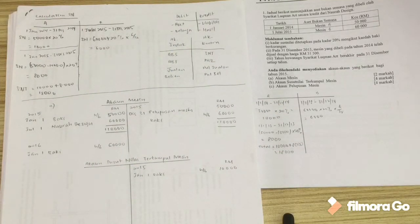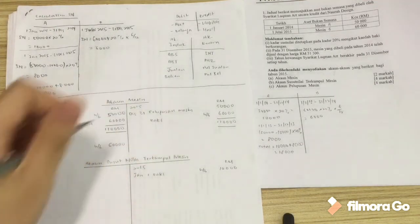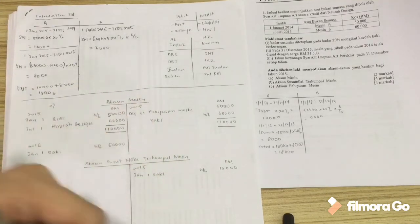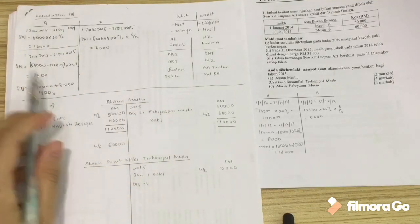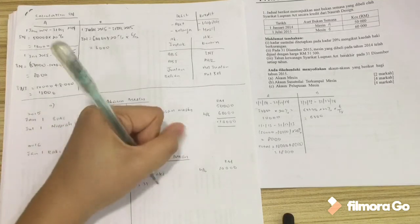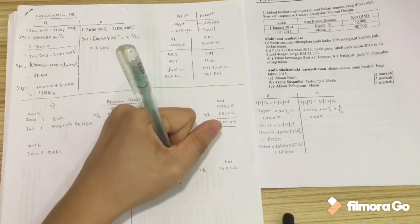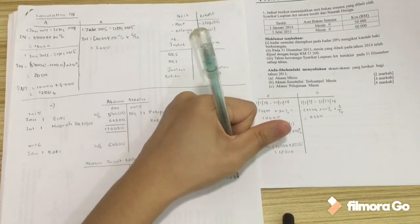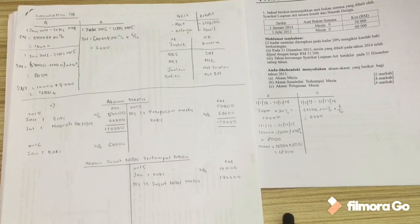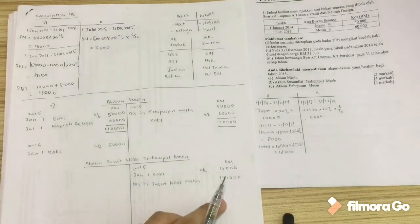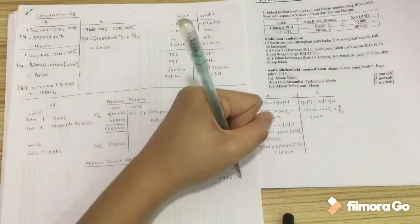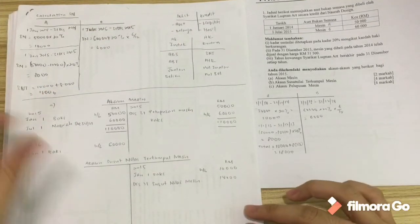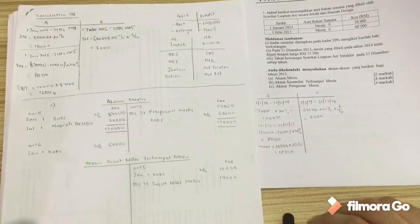The next thing we should do is to check how much susut nilai do we have for the year of 2015. The new susut nilai, we add everything up. The new susut nilai is 8,000 and 6,000. So susut nilai machine, it's 14,000 because we add this one and this one. After we record our susut nilai, we have to deal with our pelupusan machine.